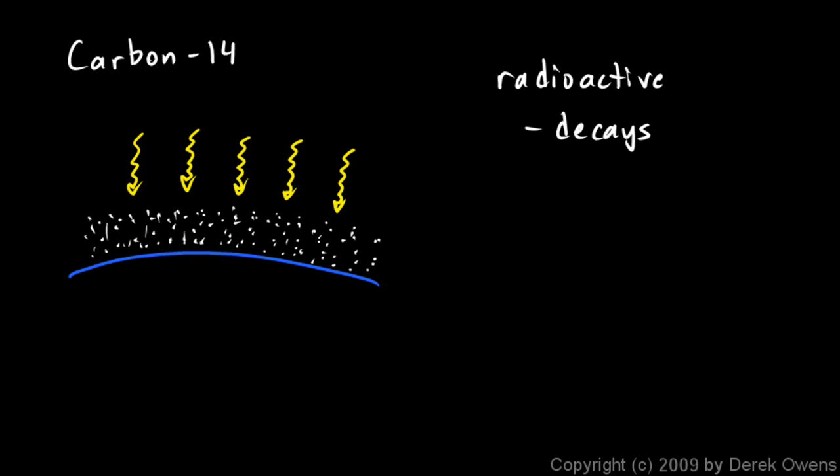But after you die, or after, say, a plant dies, say a tree in the forest, it dies, the radioactive carbon continues to decay. And people can come along later, thousands of years later, and measure the amount of radioactive carbon-14 that is left. And based on how much is remaining, they can tell how long it has been decaying. And that gives us an idea of how old something is. So you might have heard of this referred to as carbon dating. That's what this is. It's measuring the amount of carbon-14 compared to the amount of regular carbon-12. And based on the fact that the carbon-14 decays at a known rate, they can tell how long it has been decaying, or basically how long it has been since something has died.